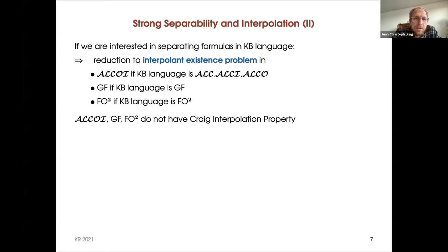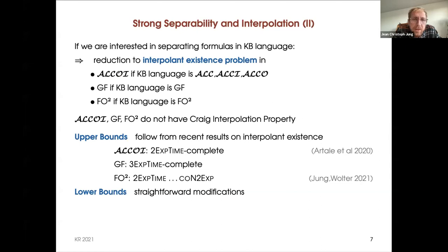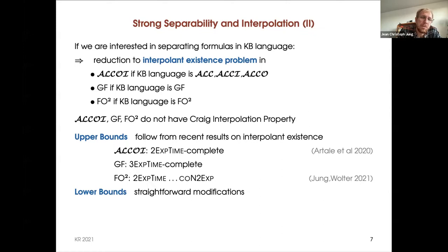These languages don't have the Craig interpolation property, but it is known — since very recently — that we can decide interpolant existence. In ALCOI this is 2-ExpTime-complete, in the guarded fragment it is 3-ExpTime-complete, and in the two-variable fragment it is between 2-ExpTime and co-nondeterministic 2-ExpTime. We get upper bounds from these known results on interpolant existence, and lower bounds via straightforward modifications.